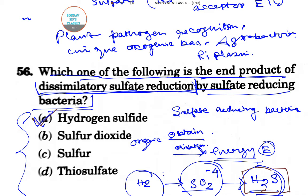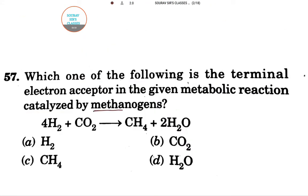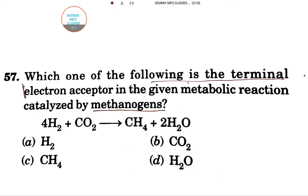The answer is hydrogen sulfide, H₂S. Now we will move to the next question, which is about methanogens. The question we have asked is: which one of the following is the terminal electron acceptor in the given metabolic reaction catalyzed by methanogens?